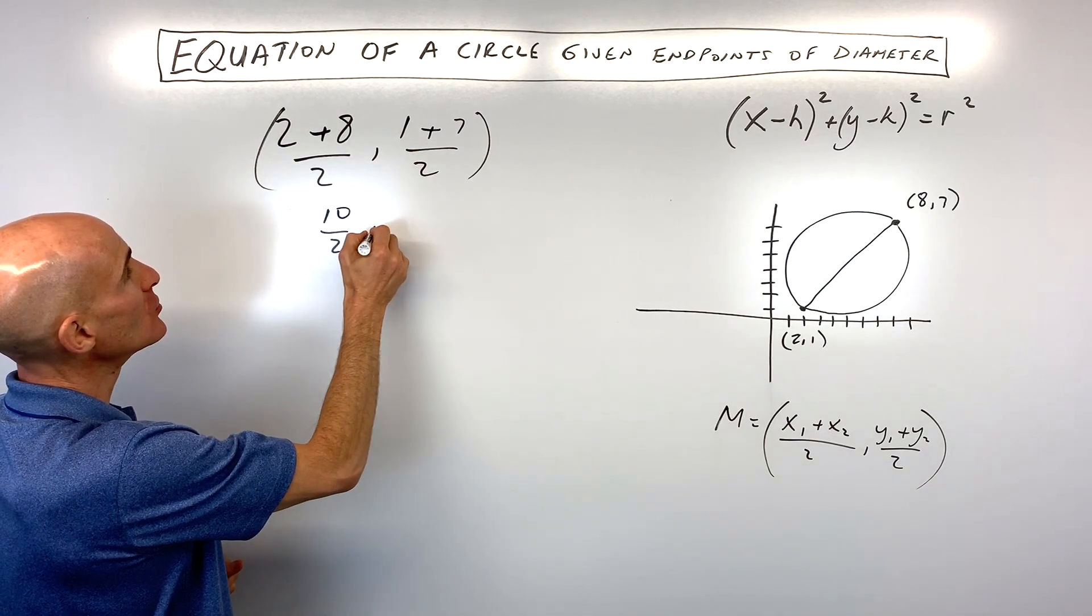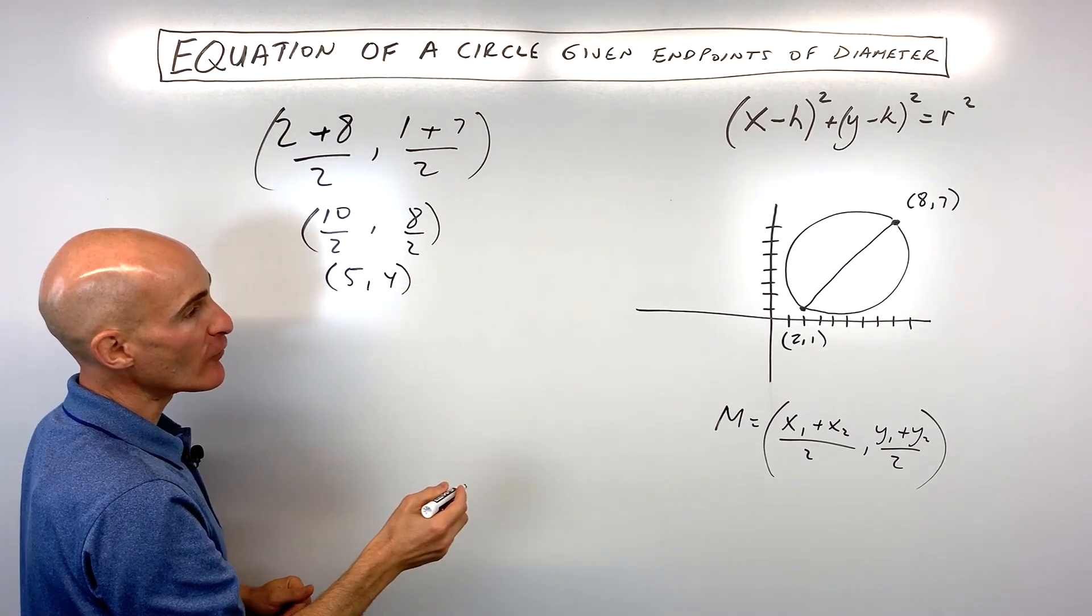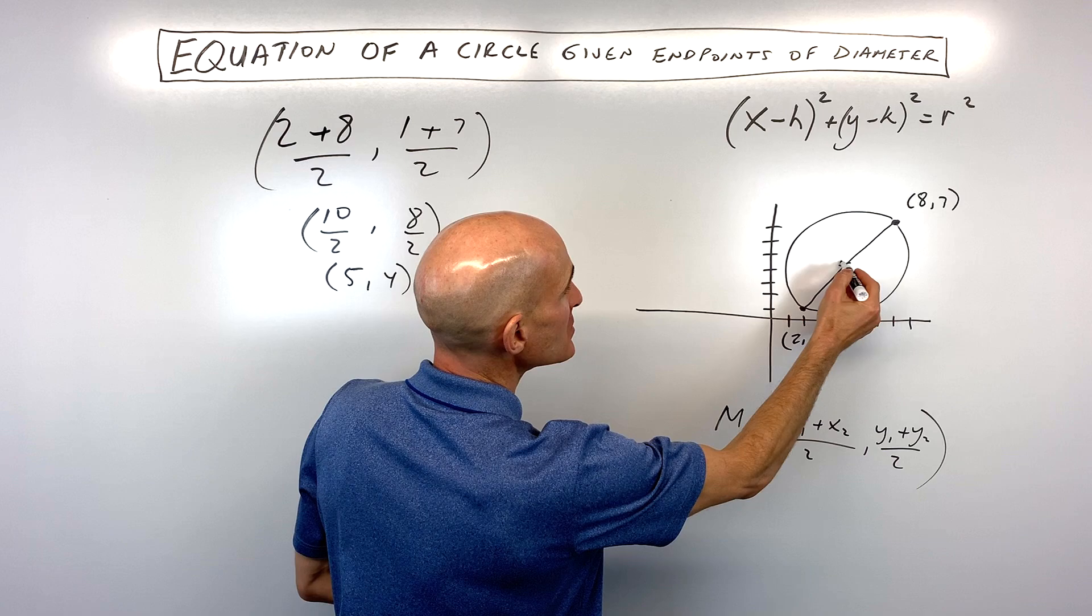So we've got 10 divided by 2, 8 divided by 2. So you can see that our midpoint here is 5 comma 4, right? 5 up 4, somewhere right into there.